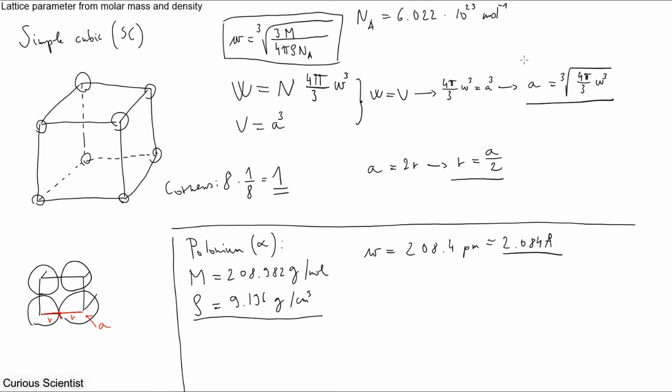And then once we have this, we can use the equation for the a. Again it's just plug and chug. So a will be equal to 335.94 picometers, or just 3.359 angstroms.